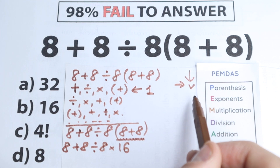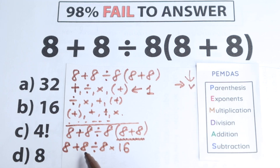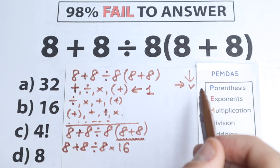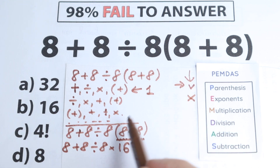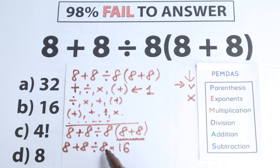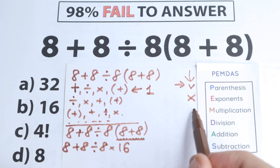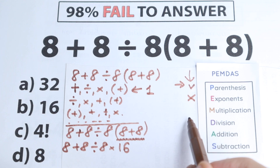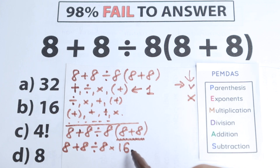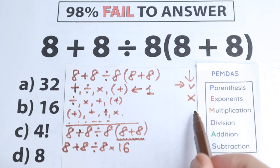Next step: exponents. I don't see any powers, squares, or cubes here, so we skip this part — it's not needed. Next step according to PEMDAS is multiplication. But a lot of students make a mistake here: they say multiplication means multiply 8 by 16 immediately, which is absolutely incorrect.